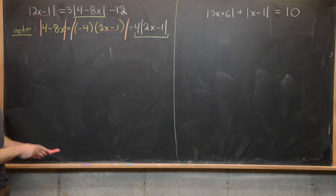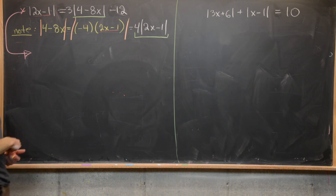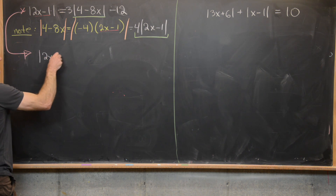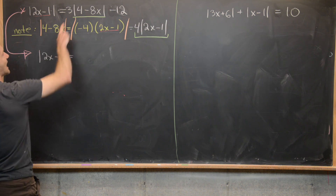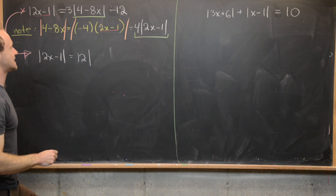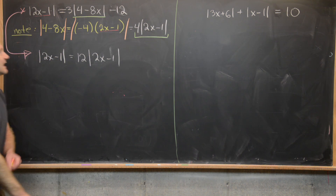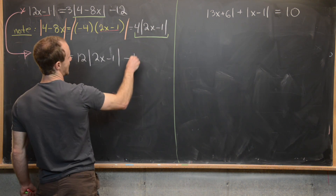Now let's use this observation to rewrite the original equation in an easier format to solve. I'm going to leave the absolute value of 2x minus 1 on the left-hand side, and on the right-hand side I have 3 times 4 — that'll be 12 — times the absolute value of 2x minus 1, and then minus 12.